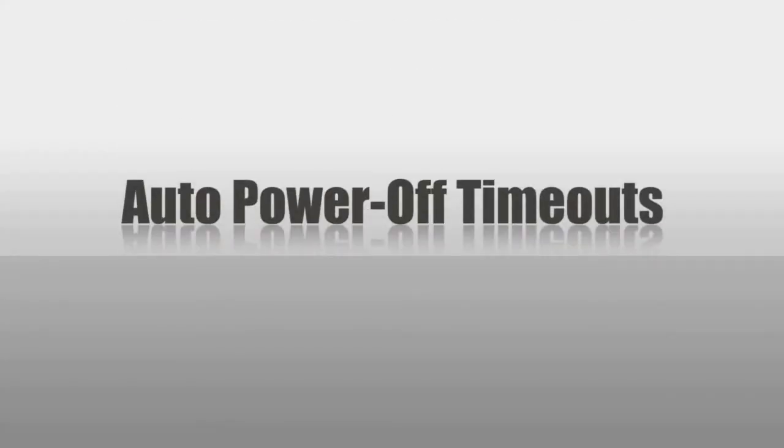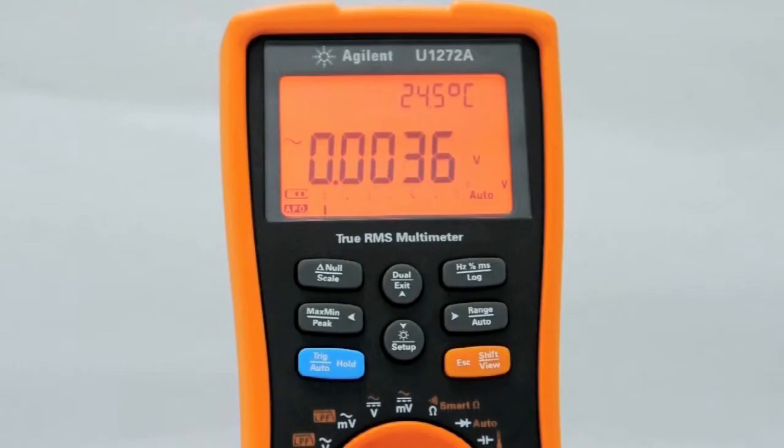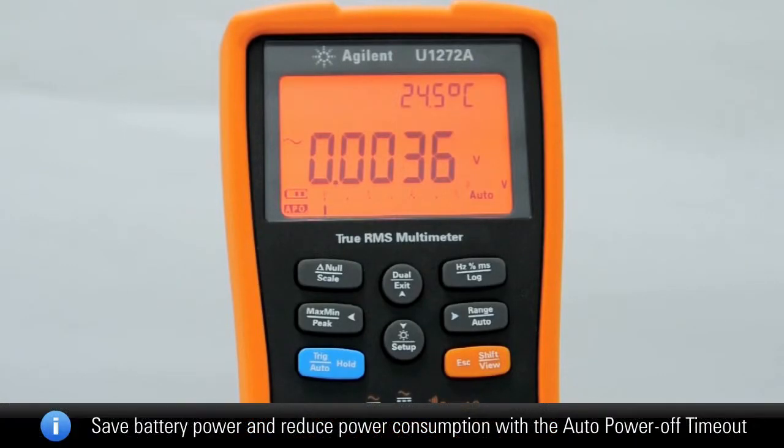Auto power off timeout: the U1272A is designed with auto power off timeout, which automatically turns off the handheld if the rotary switch is not moved or a key is not pressed for 15 minutes.